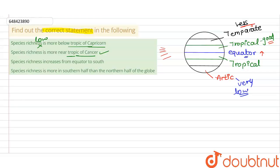Option three says species richness increases from the equator to the south. However, as we explained, moving from the equator to the south causes species richness to decrease, not increase. So this statement is wrong.